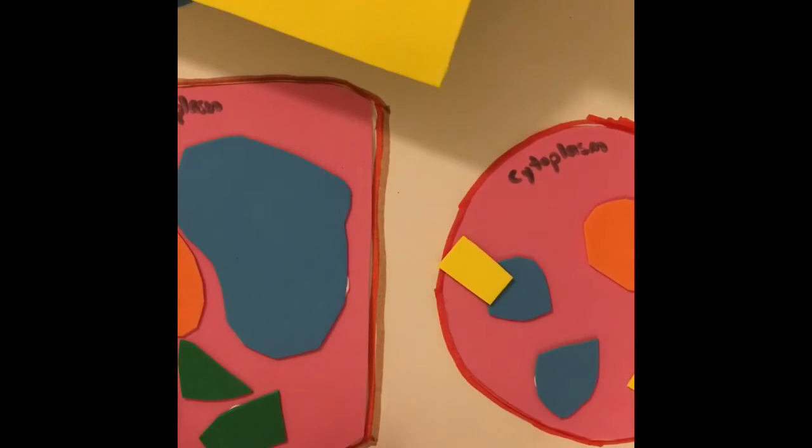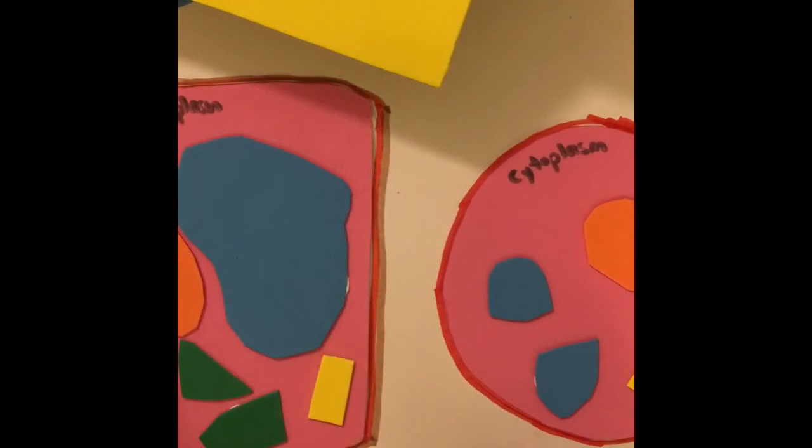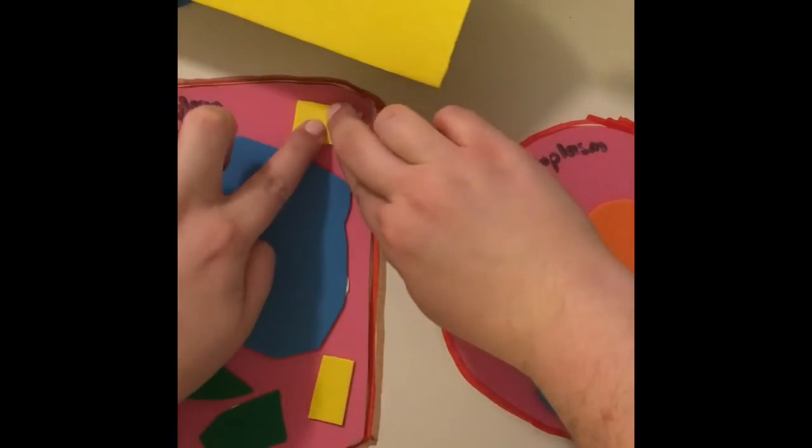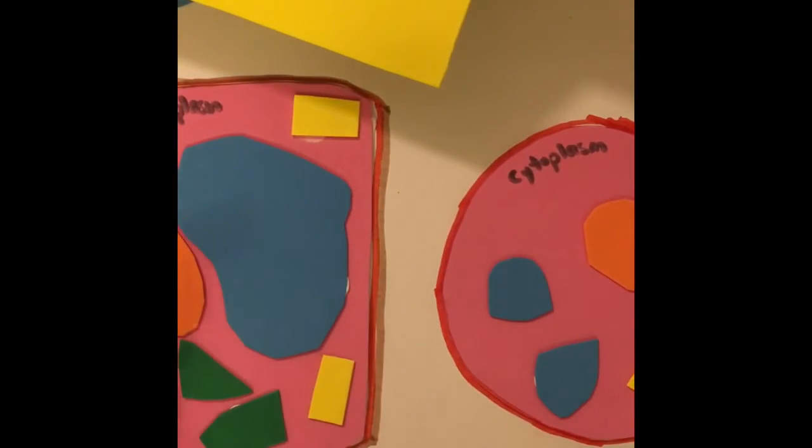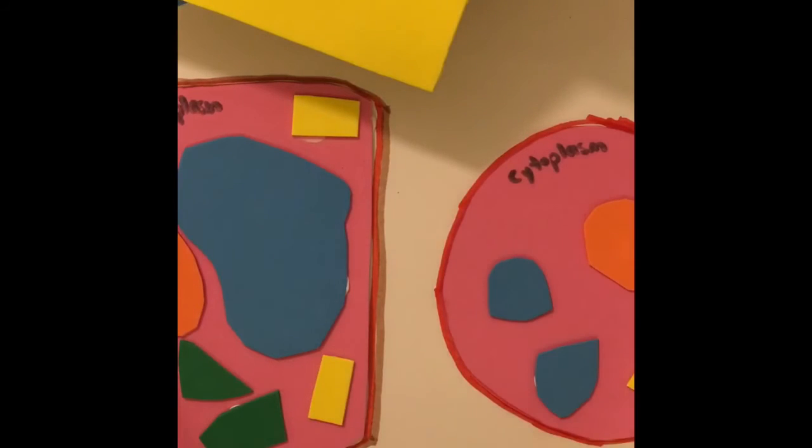And you can't forget to label. So you are more than welcome to label as you go through the process. You can also label once everything's been done at the end, as long as you remember what organelles are which color. So we have our nucleus in orange, our vacuoles in blue, our cytoplasm we already have labeled is in the pink, our yellow are the mitochondria, and over here in the plant cell we have green for our chloroplasts.